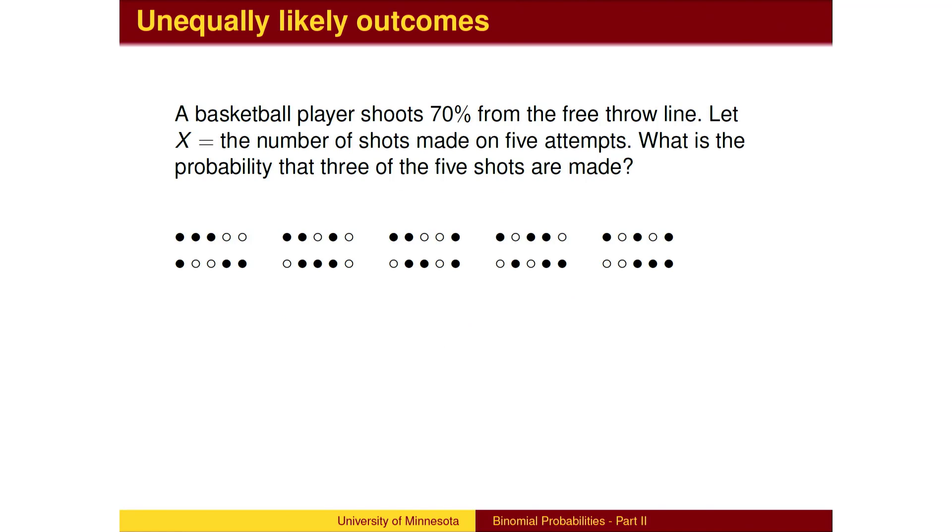Now let's shoot five free throws and find the probability that three are made. From Pascal's triangle, there are ten possible strings of three made and two missed free throws. The probability of any such string is 0.7 to the third power times 0.3 squared.